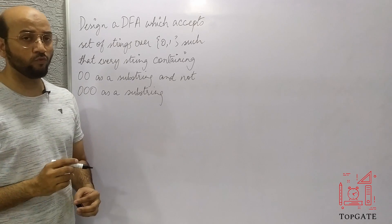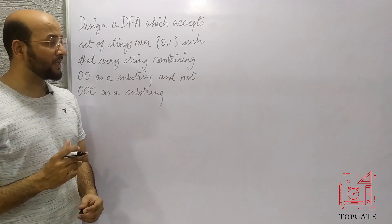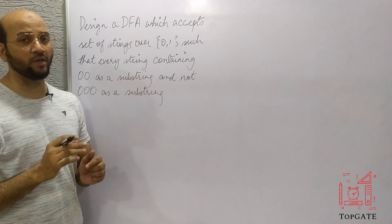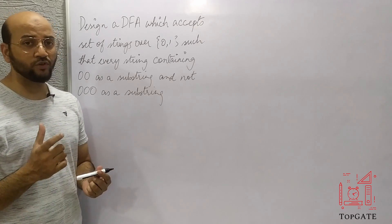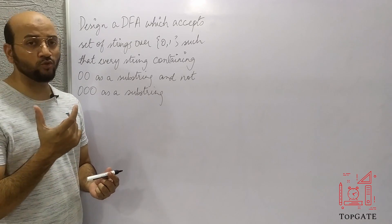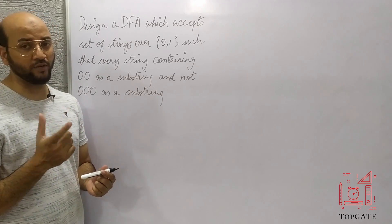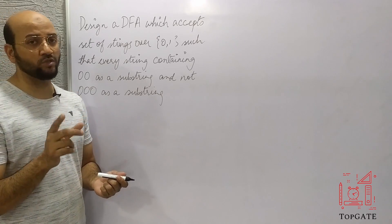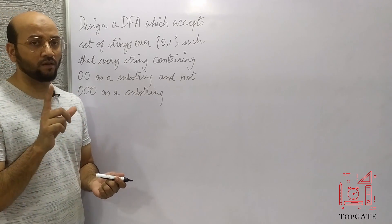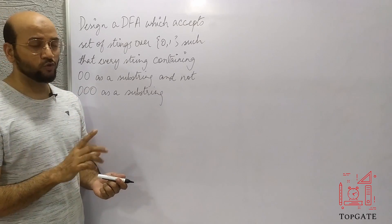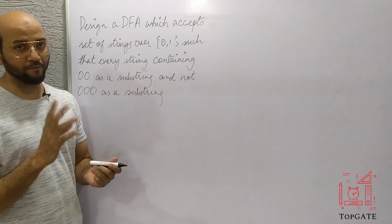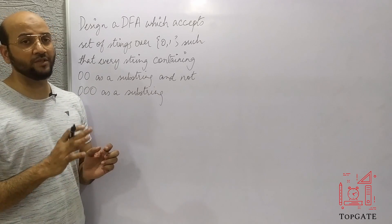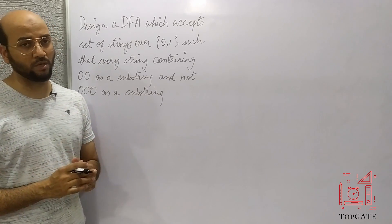So what do we need here? We need to accept all strings of 0s and 1s such that every string should contain '00' as a substring, there should be no '000'. That is, after every two 0s, there needs to be at least one 1. It should not accept any string which contains '000' as a substring.